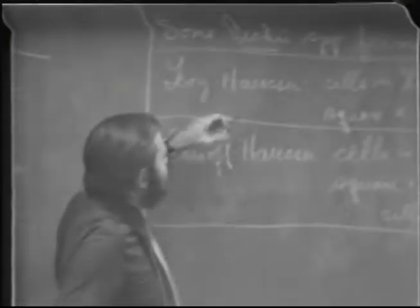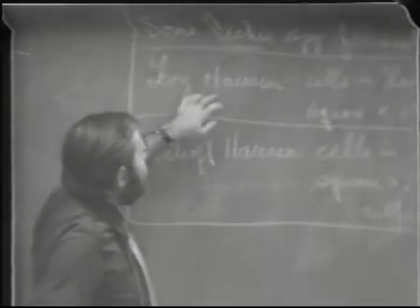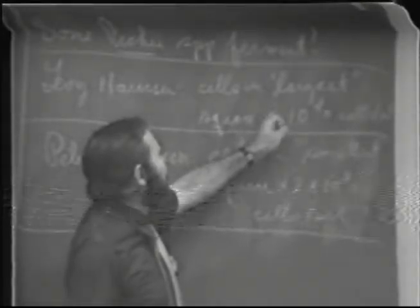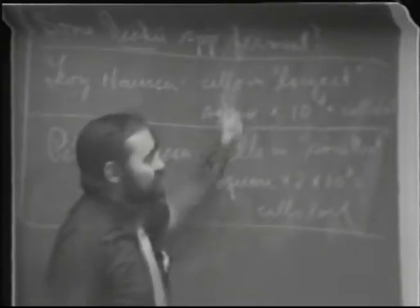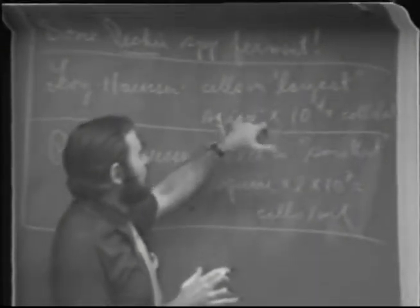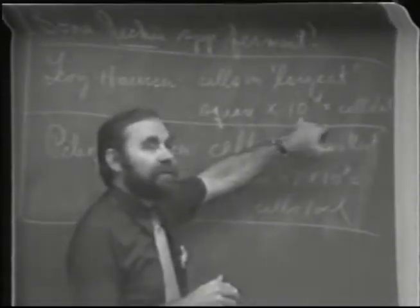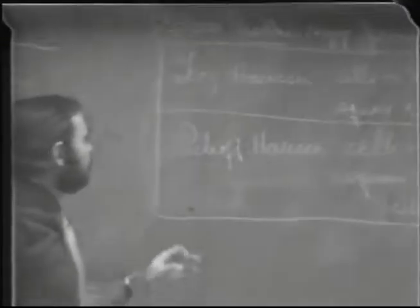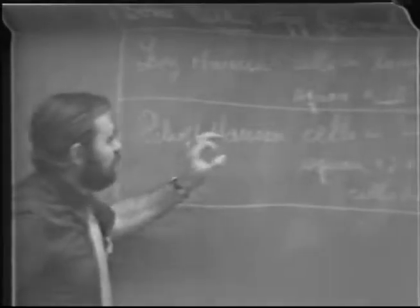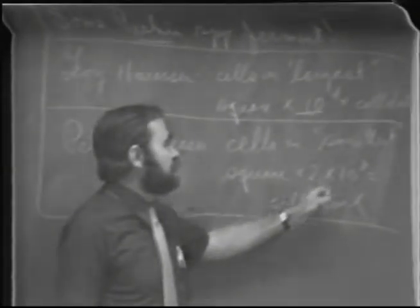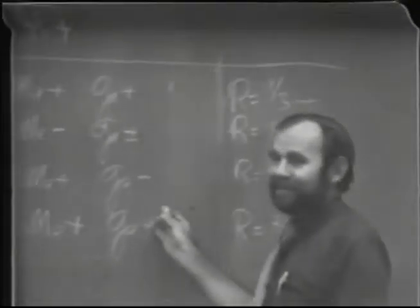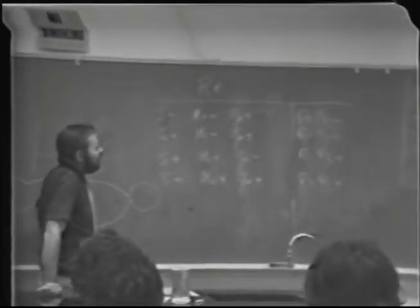The Levy-Hauser chamber: as John Jeffrey pointed out, the largest square is the overall field. The number of cells in the largest square times 10 to the fourth gives you the number of cells per milliliter. The Petroff-Hauser chamber: you take the smallest square and multiply times 2 times 10 to the seventh. There's a misprint on the handout — please change it.